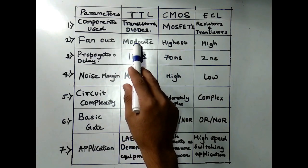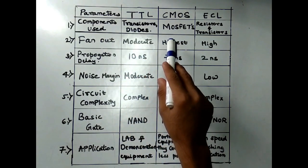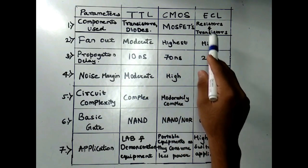TTL stands for Transistor Logic, CMOS stands for Complementary MOSFET and ECL stands for Emitter Coupled Logic.